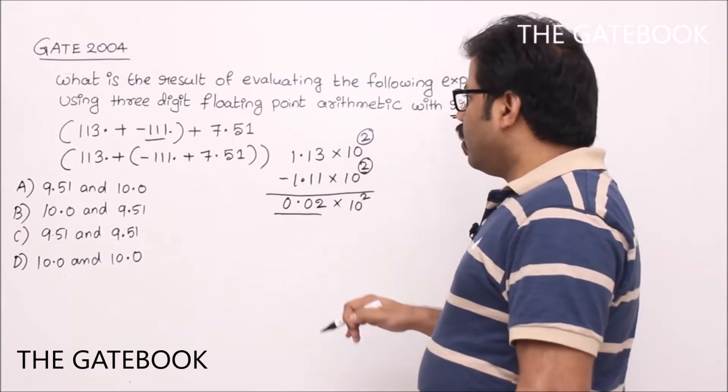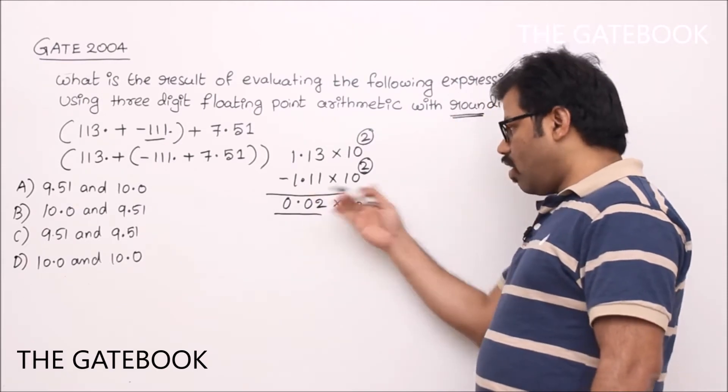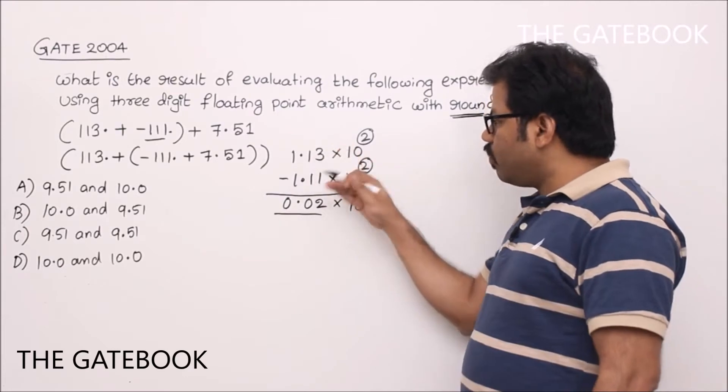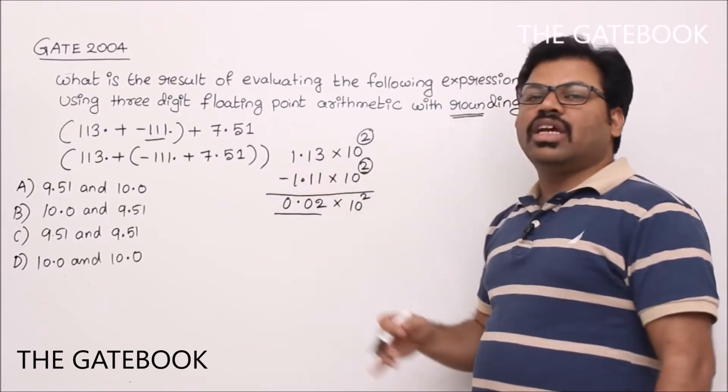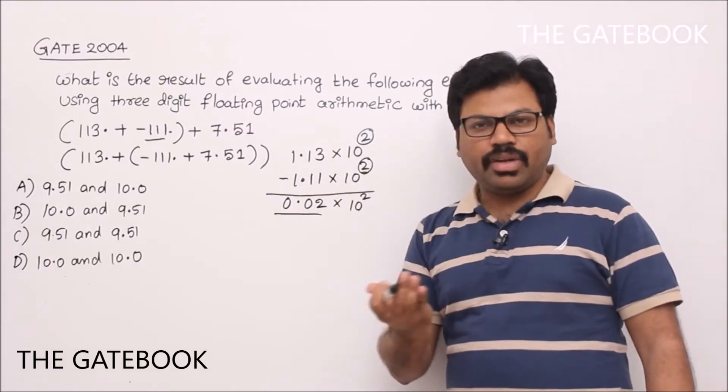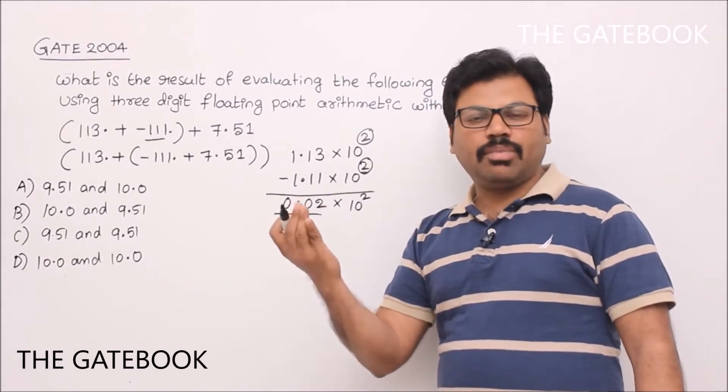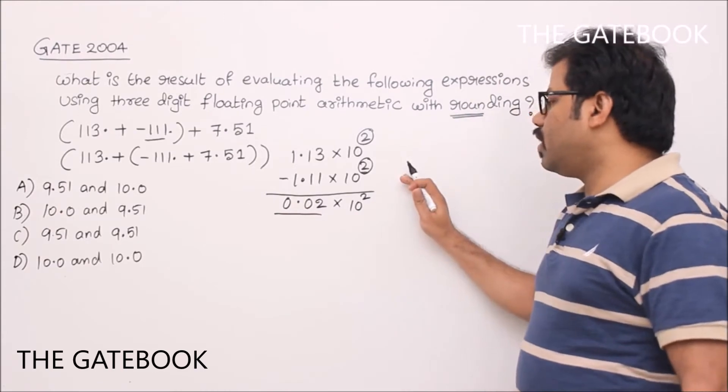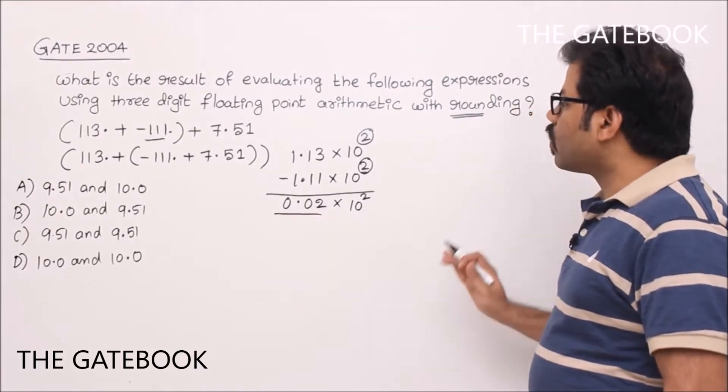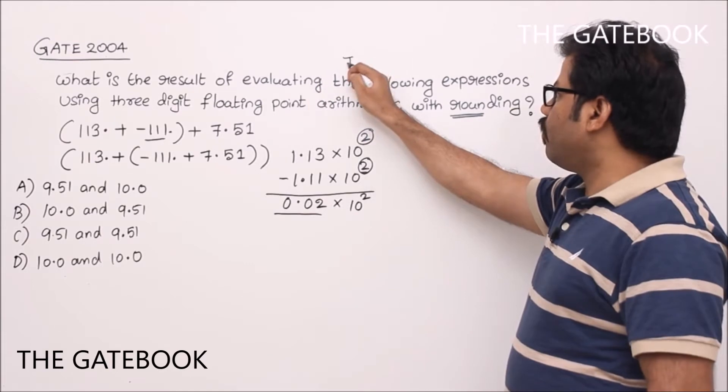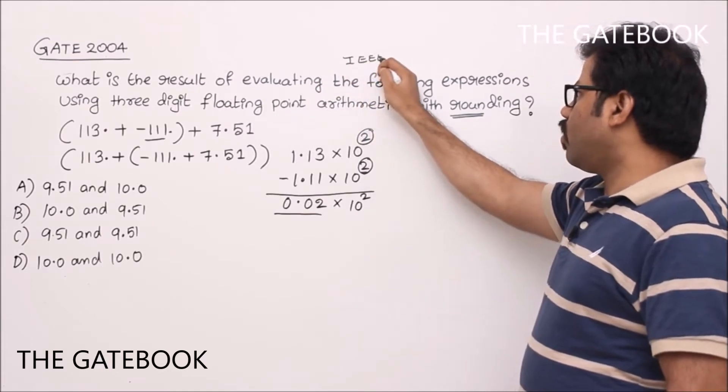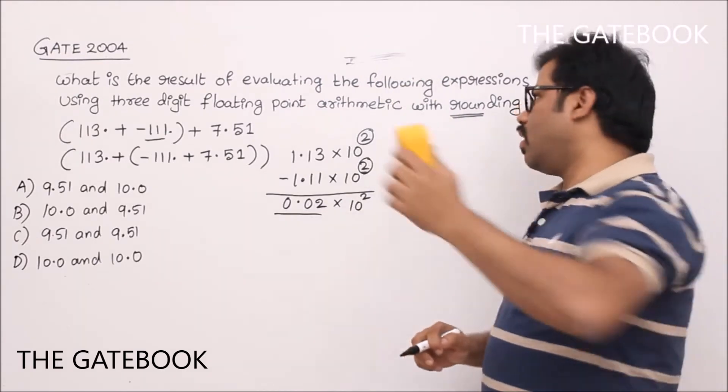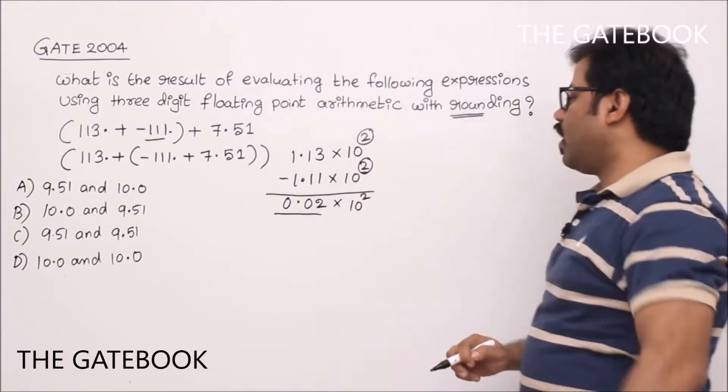So here you don't need extra guard digits, because we know the numbers were representable in three digits. If you have a number which cannot be representable in three digits but representable in more digits, we have to use guard digits. And one more thing, it is not IEEE 754 format. So number of guard digits are not mentioned. So we can take any number of guard digits.